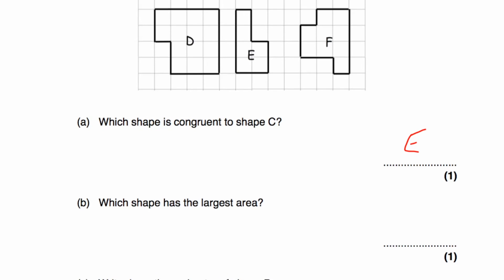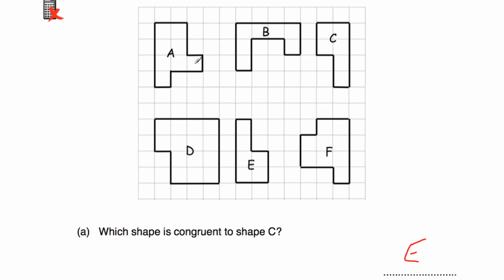Part B says: which shape has the largest area? Shape D has an area of fourteen centimetres squared. E and C each have area six. B has area seven. A has area eight. F has area nine. So D has the largest area.